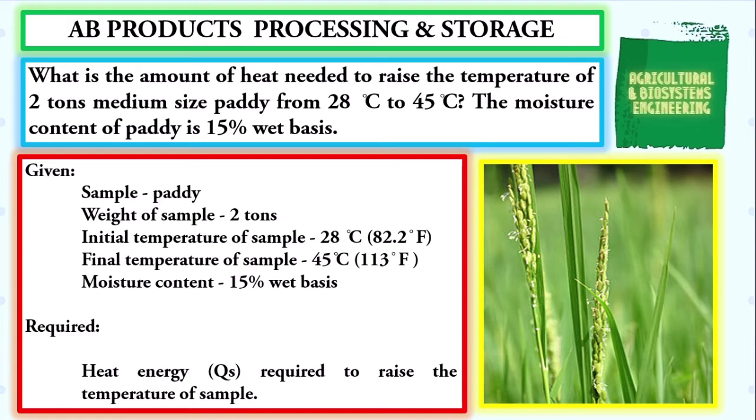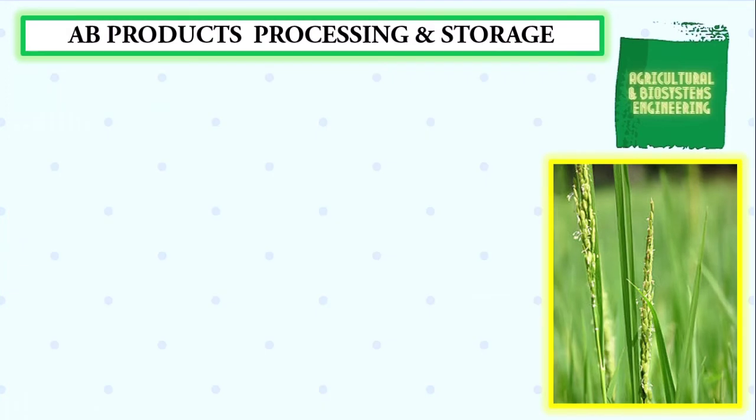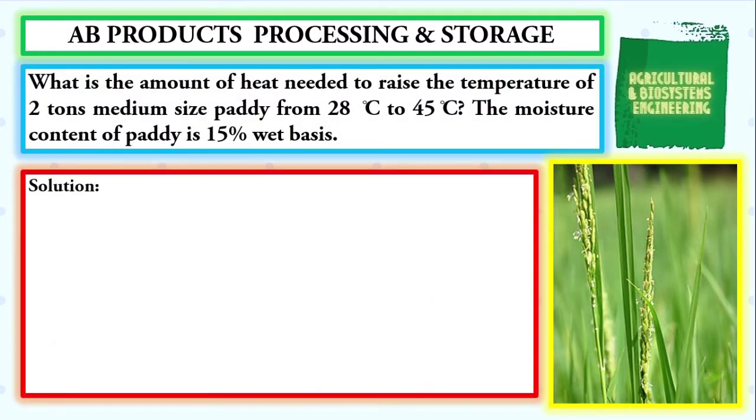After identifying the given and the required in the problem, we proceed with our solution. The formula to solve for the heat energy required to raise the temperature of the sample is QS, or the heat energy, equals the product of the mass times the specific heat, symbolized by C, times delta MC, or the change in moisture content.